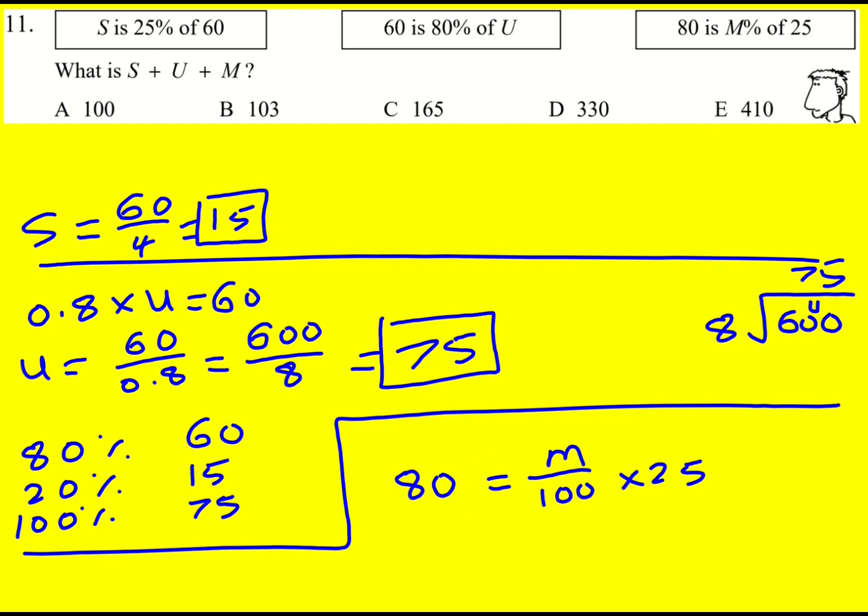So I'm using the same kind of principle here. What I'm going to do is rearrange it so M is going to equal 80 multiplied by 100 divided by 25, and I'll just do 100 divided by 25 to give 4.